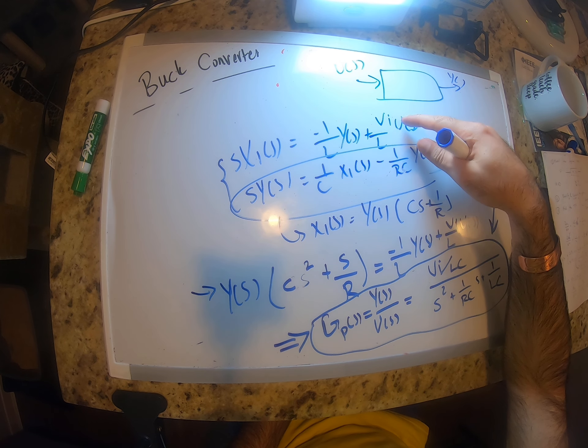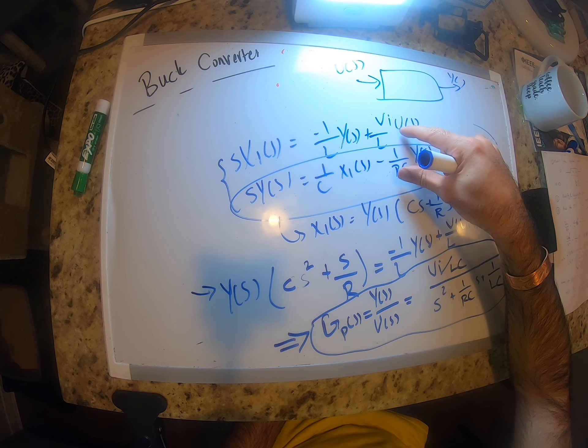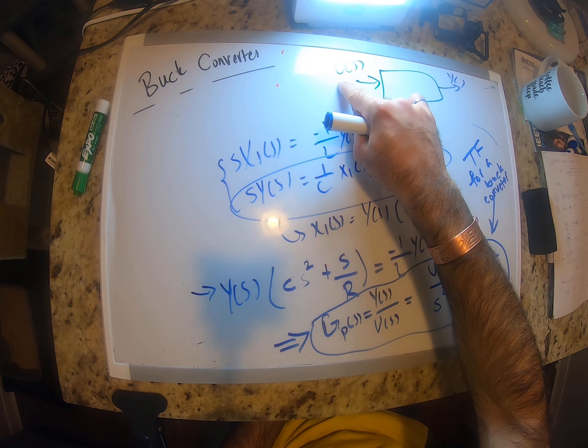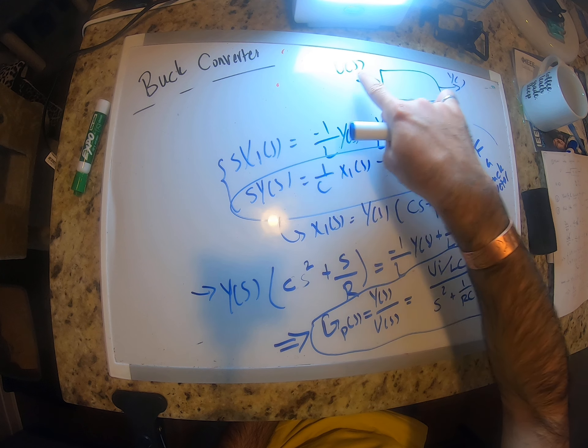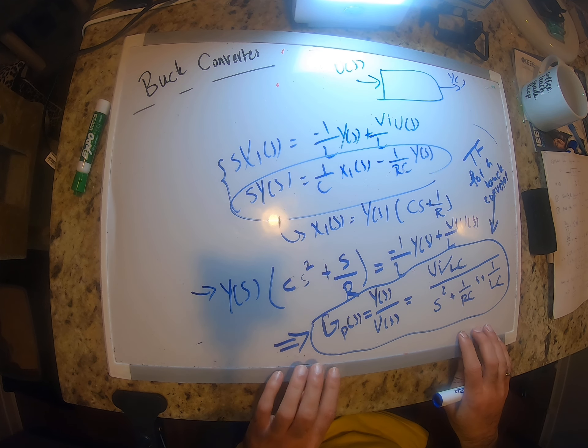You simplify these and take them to the s-domain, you simplify them so that you end up with one equation that relates your output to your input. Output is the output voltage, input is our duty cycle. This is basically the transfer function of the buck converter.